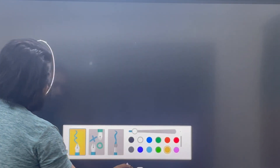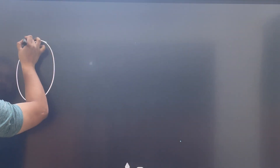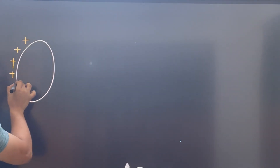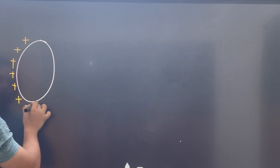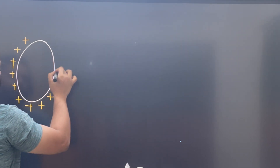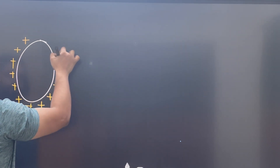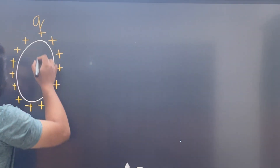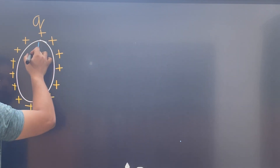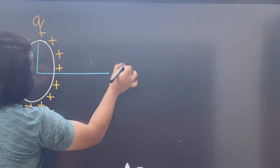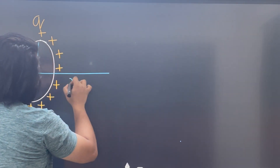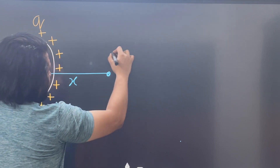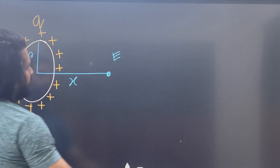The ring is charged positively, and the charge on it is q. The ring has a radius, so we have a ring with a radius R, and we need to be able to work with this.